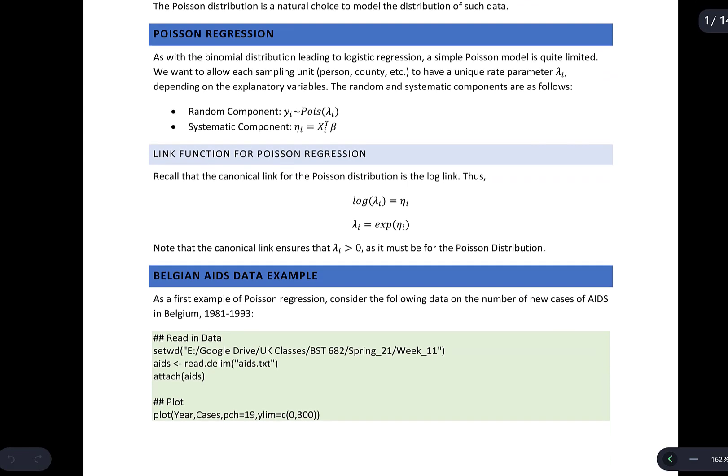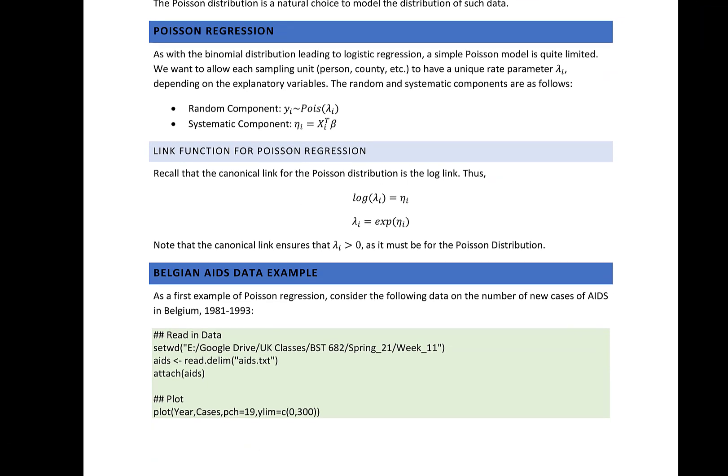Just as a reminder, we worked with the binomial distribution which led to logistic regression. Here we're going to be working with the Poisson distribution for Poisson regression. The simple Poisson model can be quite limited, but the idea is we want to allow each sampling unit — whether it be a person, a county, or a hospital — to have a unique rate parameter lambda_i. Remember that for the Poisson distribution, the rate parameter is both the mean and the variance; they're both equal to lambda, and this becomes important later as one of the restrictions of the Poisson distribution.